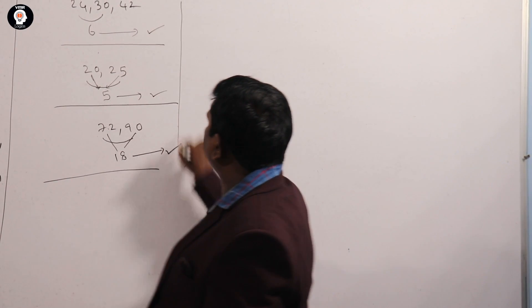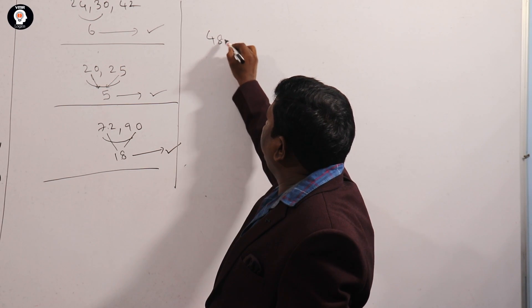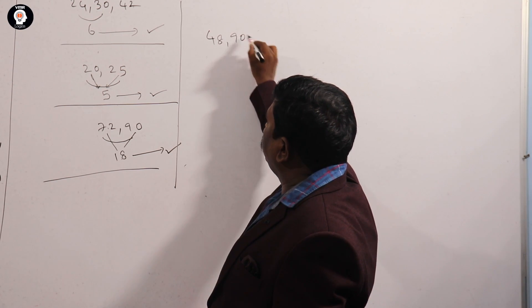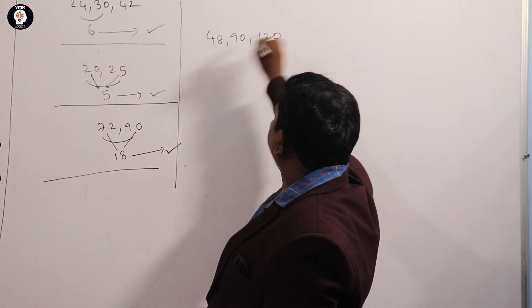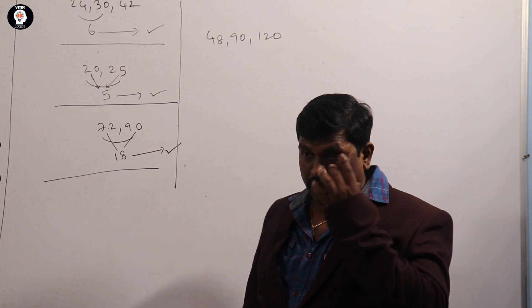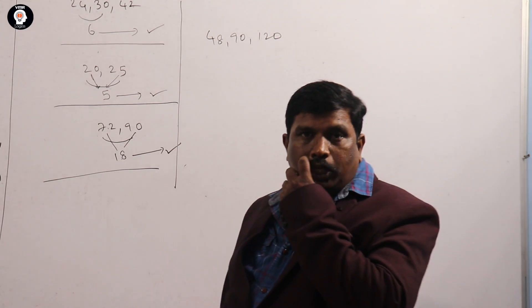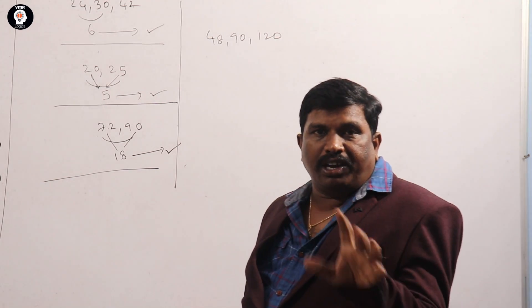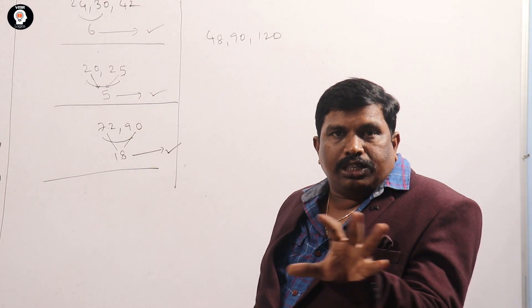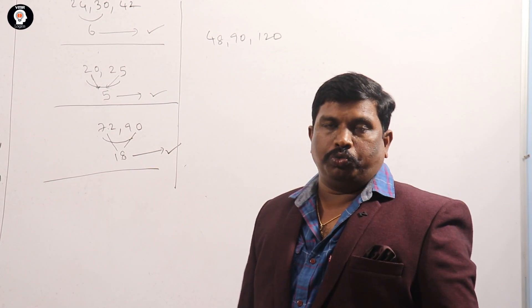One more example: 48 and 90. GCD is a factor. What is the minimum difference? That is the minimum difference — 30. The minimum difference is the factor.